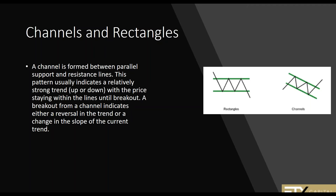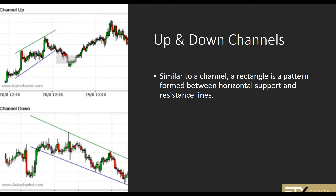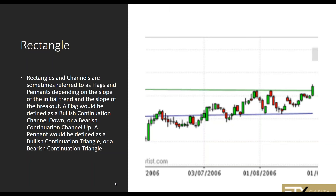Then we go into channels and rectangles. Channels are simply down-moving support and resistance lines. Rectangles are sideways or horizontal support and resistance lines, and these support and resistance lines don't come from Fibonacci — they really come from eyeballing. When you can see two common swing highs or swing lows that the asset keeps touching, you can establish your support and resistance lines for your triangles, rectangles, and channels. Rectangles and channels are sometimes referred to as flags and pennants, and you'll see the names interchange.